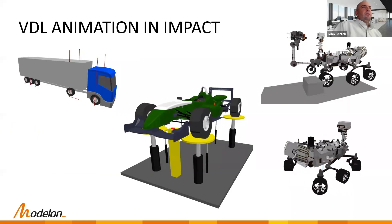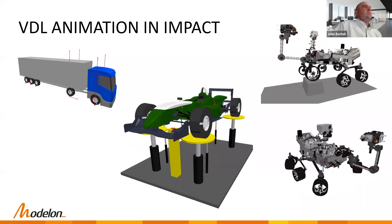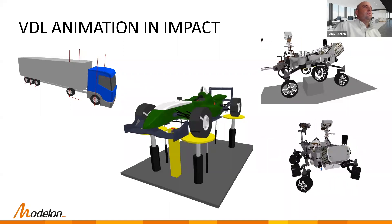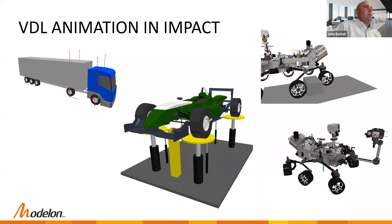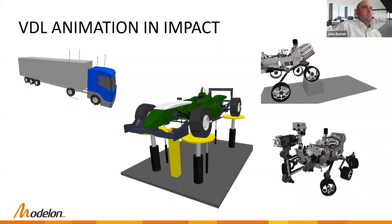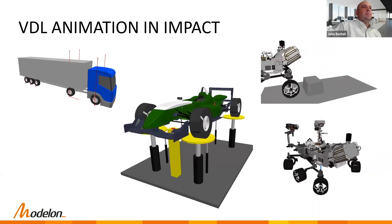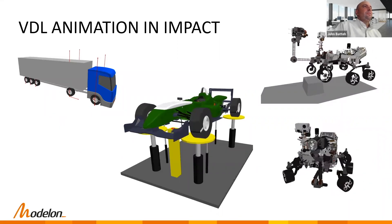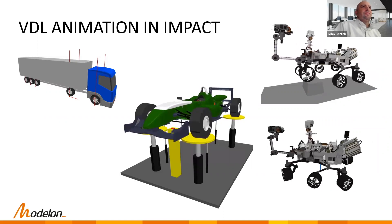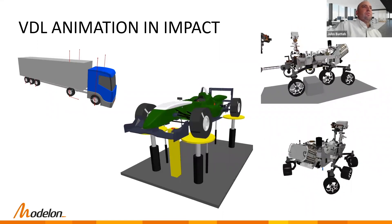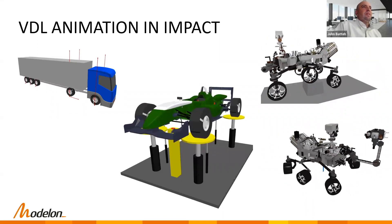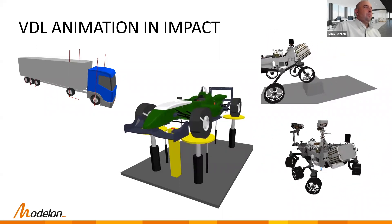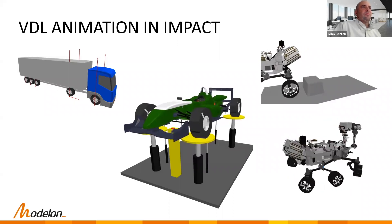As Jiri mentioned, we have animation in Modelon Impact. This shows a few nice examples of different simulations animated in Impact — trucks, motorsports on a four-post rig, and even a simulation of the Mars rover. The word 'vehicle' covers a pretty wide range of things in terms of our library capability.